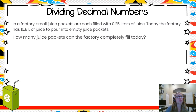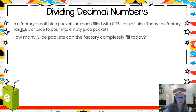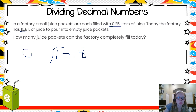In this problem, picture what's going on: we're taking an amount of juice and dividing it into small portions for each of these little juice packets. So 15 and eight tenths is what goes under the house — this is what's being divided. I write that as 15.8, and I'm dividing that by the amount of juice in each packet, 25 hundredths, which goes along the outside.